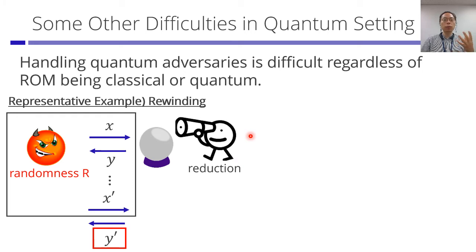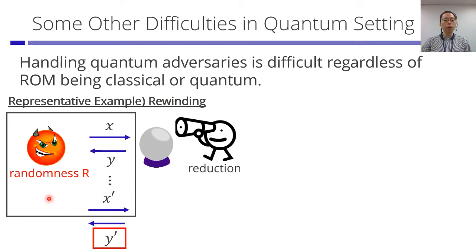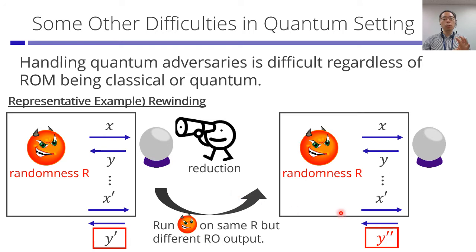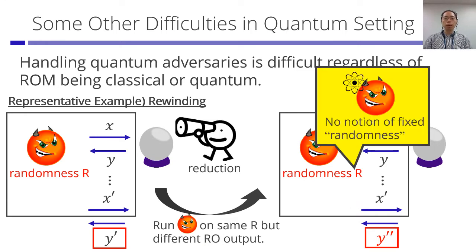There is also difficulty from using quantum adversaries regardless of whether the ROM is classical or quantum. A representative example is rewinding-type arguments. This is a proof technique where we fix the randomness R for the adversary, run the reduction, program the random oracle up to some point, then rewind the adversary to some point X prime and reprogram the random oracle on X prime, running the adversary again on the same randomness R. The issue in the quantum setting is that there is no notion of fixed randomness, so this general technique may not work.